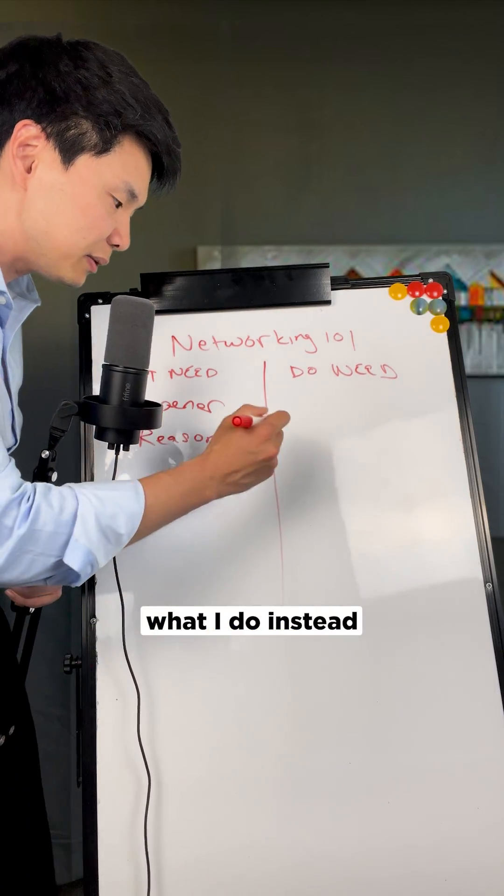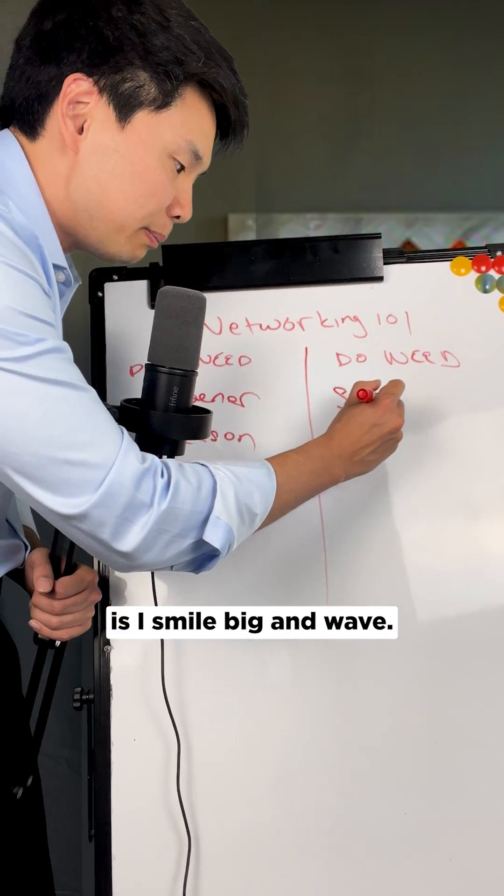So specifically what I do instead is I smile big and wave. I make sure that I make eye contact with whoever it is that I want to speak to. So whenever I scout for anyone I want to see, I make sure I identify that person.